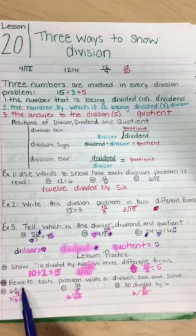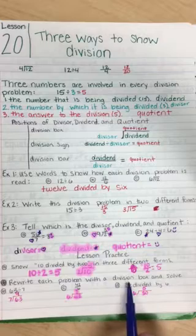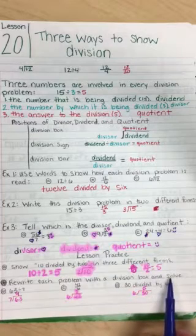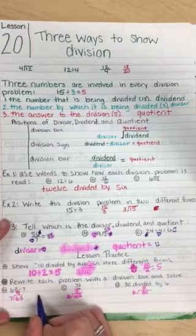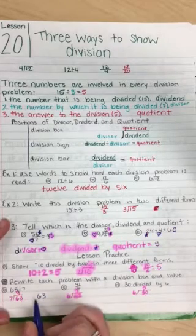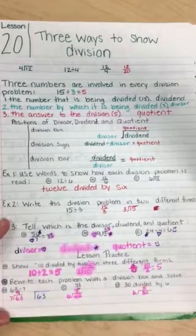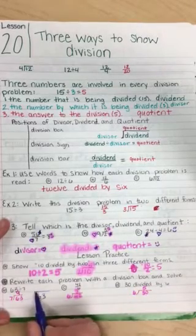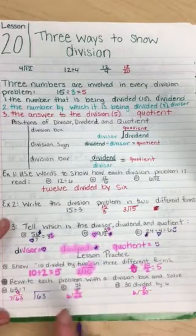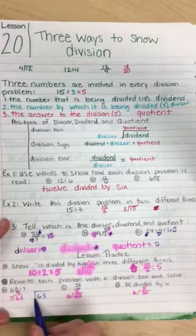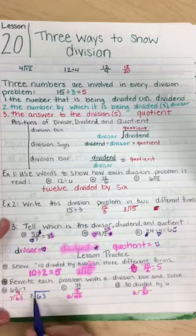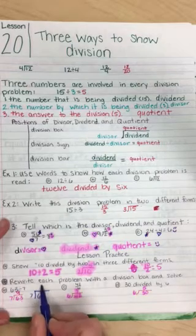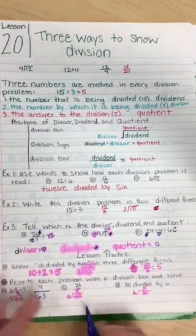And B, rewrite each problem with a division box and solve. So 63 divided by 7. 63 is the biggest number, so you're going to box it in. If you're the head honcho, everyone wants to box you in. That's not true. I just said that. 63, the big one. What are you dividing it by? 7. How many times can 7 go into 63? 9.